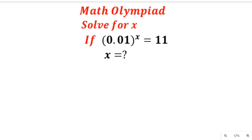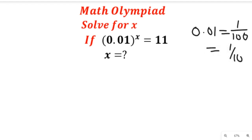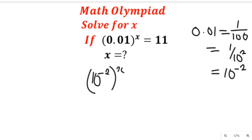Now if we take that part and change it to a fraction, we'll have 0.01, which is equal to 1 divided by 100. Now this can be equal to 1 divided by 10 to the power of 2, and this can still be equal to 10 to the power of minus 2. So we'll bring that in here, giving us 10 to the power of negative 2, raised to the power of x, equal to 11.